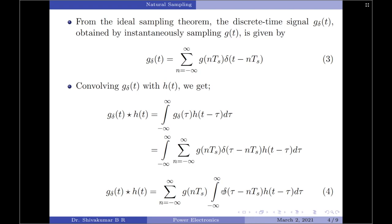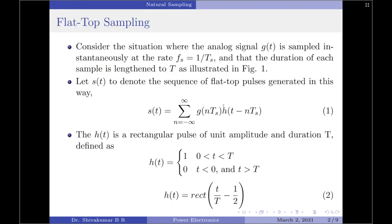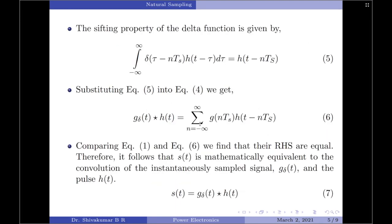Substituting equation 5 into equation 4, the complete integral term is replaced by h(t − nTs), giving g_delta(t) convolved with h(t) equals summation of g(nTs) times h(t − nTs). Very interestingly, we now have two equations: equation 6 just derived, and equation 1 from the start. Comparing the right-hand sides, both are summation of g(nTs) times h(t − nTs) — they are exactly equal.